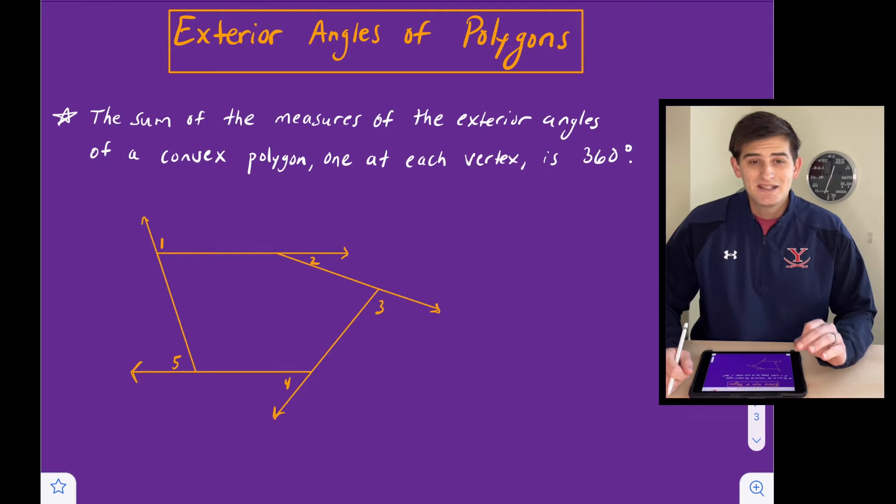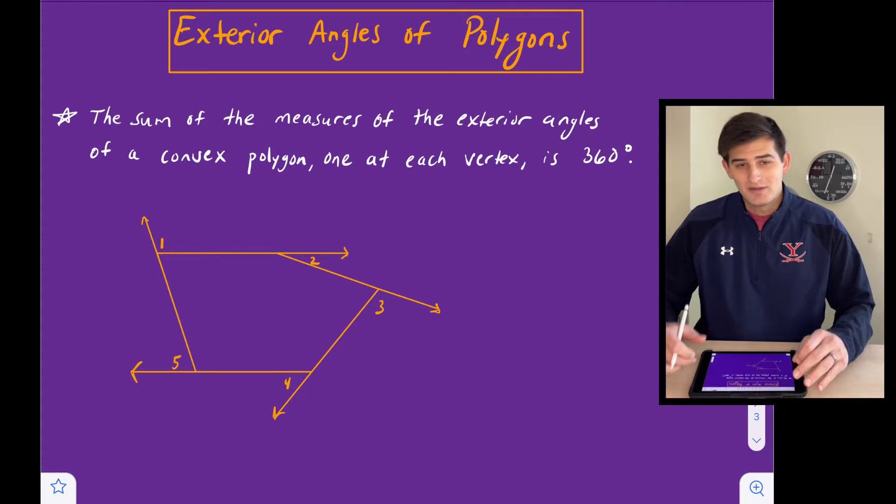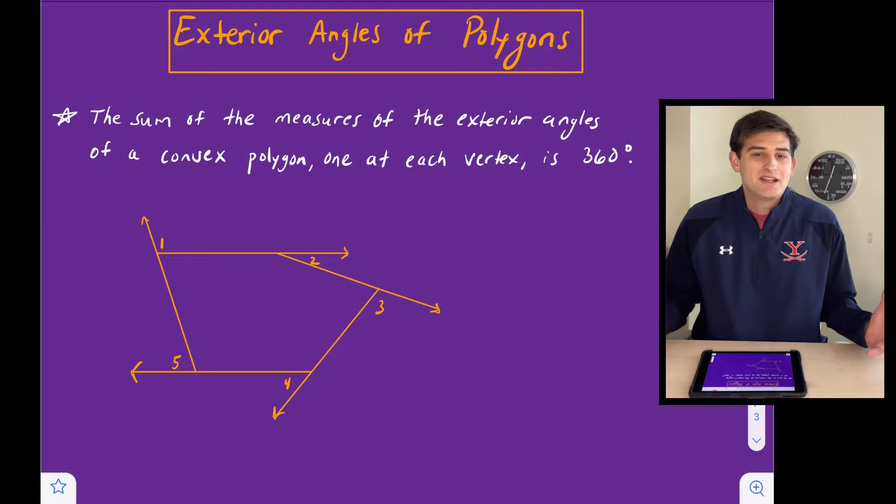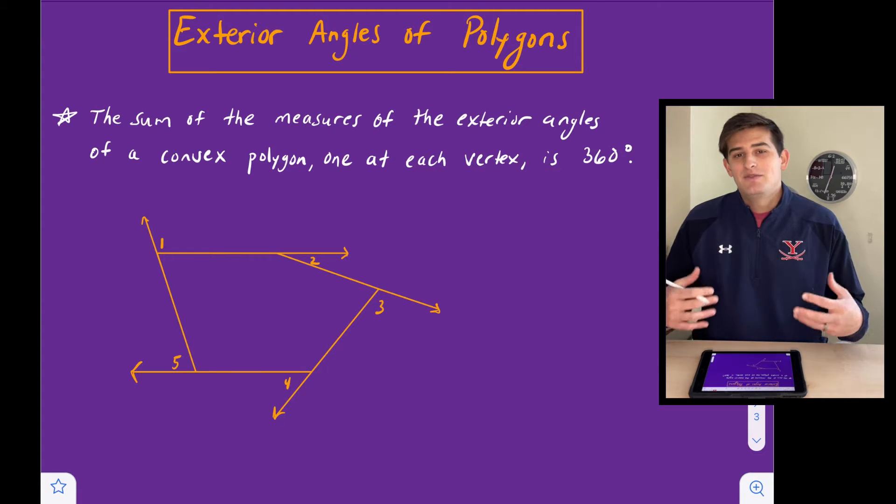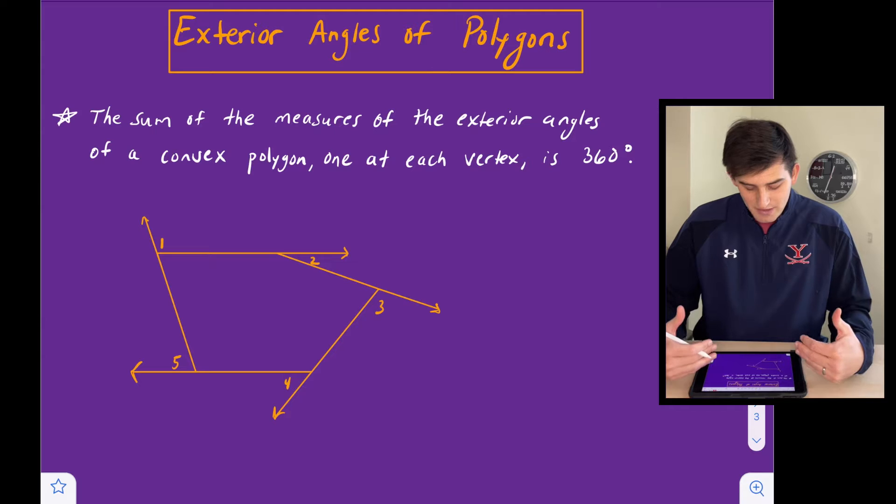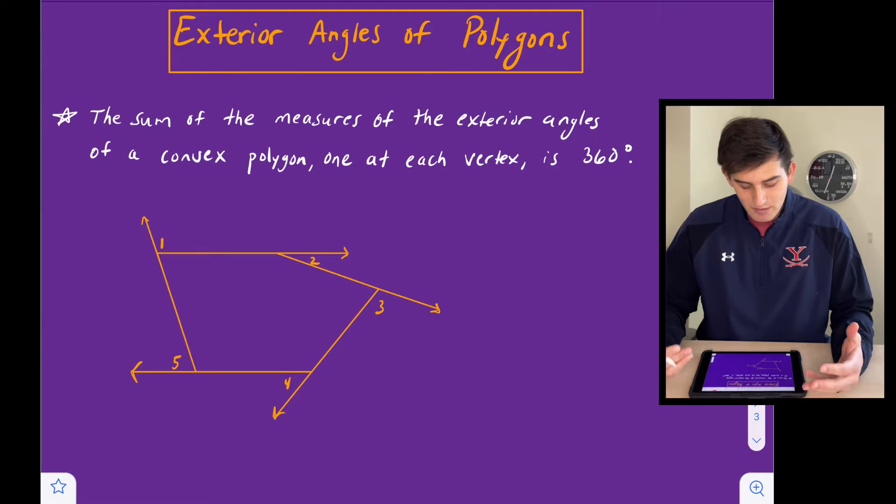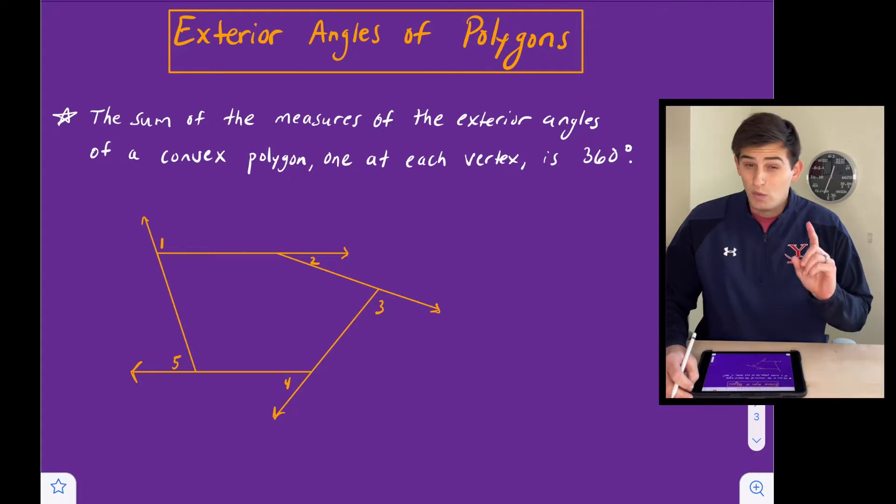Hello everyone, in this video we're going to talk about exterior angles of polygons. With exterior angles, it doesn't matter how many sides there are—the angles are going to add up to 360 degrees. So that's what we see here next to this star: the sum of the measures of the exterior angles of a convex polygon, one at each vertex, is 360 degrees.